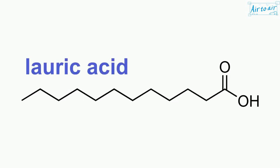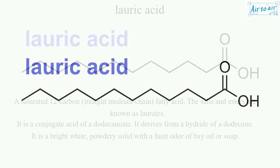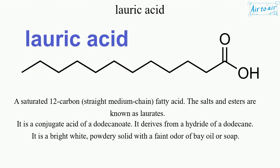Lauric acid is a saturated 12-carbon, straight-medium chain fatty acid. The salts and esters are known as laurates. It is a conjugate acid of a dodecanoate, and it derives from a hydride of a dodecane.